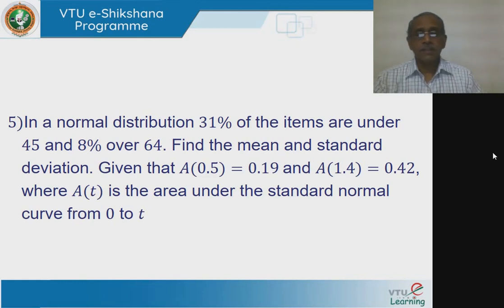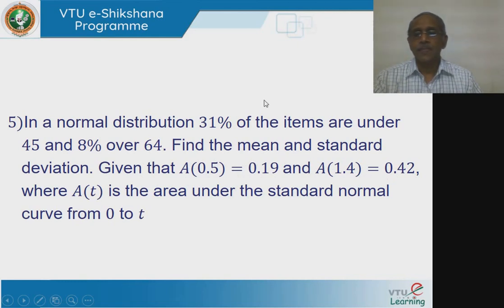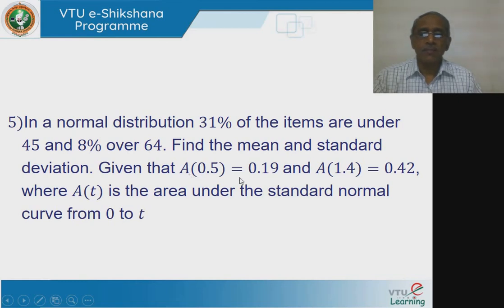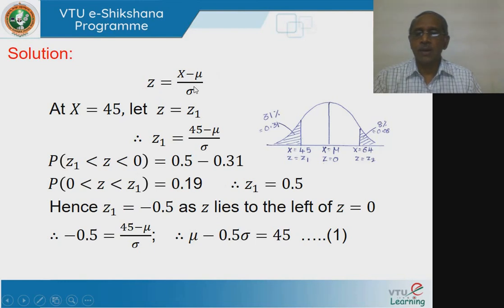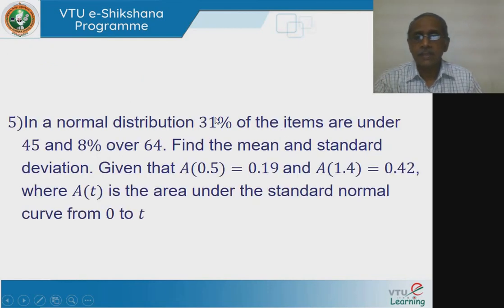In this problem the areas are given, so we don't have to look into the table. We can use these given area values to solve this problem. The given problem is: in a normal distribution, 31% of the items are under 45 and 8% are over 64. Find the mean and standard deviation. So let us write the standard normal variable z = (x - μ) / σ.